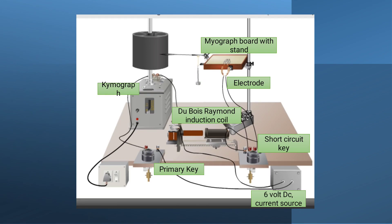We have two types of circuits in this experimental setup. One is a primary circuit and another is the secondary circuit. The primary circuit starts with a current source — a 6-volt DC current source. From it, wires go to the primary key. From the primary key it goes to an instrument known as the kymograph, which is actually the recorder. From the kymograph it comes to the primary coil of the Dubois-Reymond induction coil, then goes back to the source to complete the circle. When the contact box and the striker at the kymograph come in contact with each other, the primary circuit will be complete, and if the primary key is on, there will be current flow in this primary circuit.